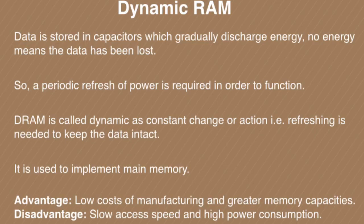Dynamic RAM is used to implement main memory. We know that main memory is larger than cache memory. Its advantage is low cost of manufacturing and greater memory capacities. Its disadvantage is slow access speed and high power consumption. So these are the two types of RAM: Static RAM and Dynamic RAM.